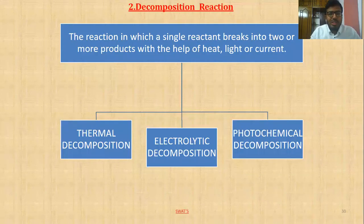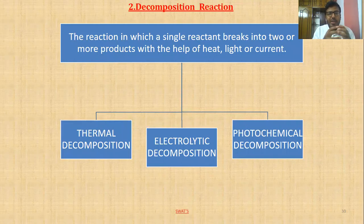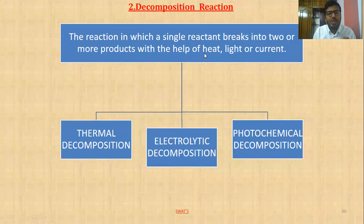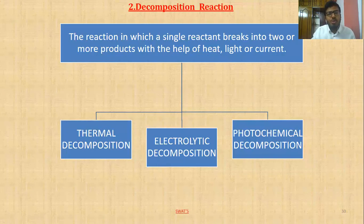We are starting with the next topic: decomposition reaction. In combination reaction, you remember there was combining — two reactants forming into one product. Now in decomposing, there will be only one reactant and that will break down into two or more products. That is the basic definition of decomposition reaction: a reaction in which a single reactant breaks into two or more products with the help of heat, light, or current.